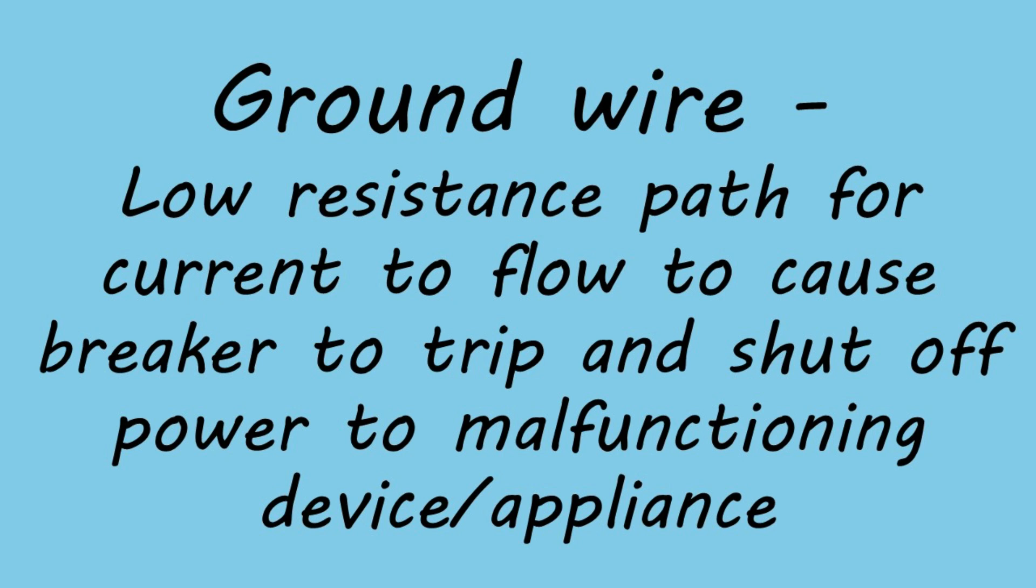The ground wire is there purely as a safety measure. If there's ever an electrical problem with the device, the ground wire provides a low resistance path for electricity to flow back to the panel. And since it's a low resistance path, a very large current will flow, causing the breaker to trip and shutting off power to the device with the problem.